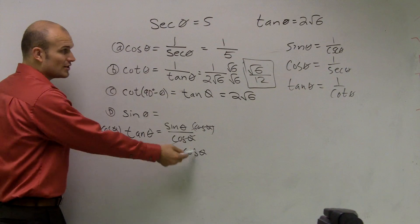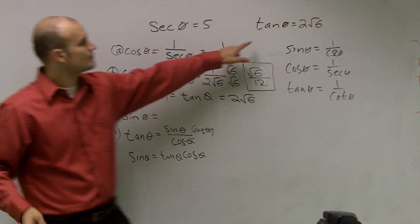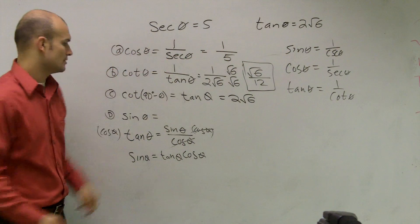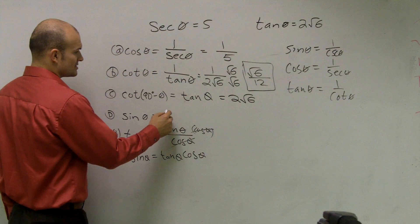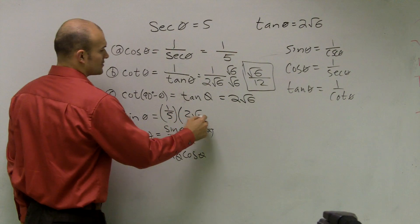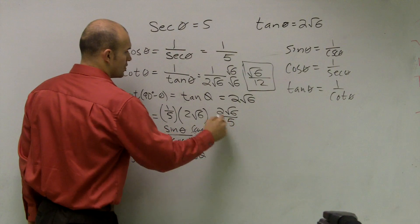Then do I know what tangent is and do I know what cosine is? Right there. So therefore, our final answer is 1 fifth times 2 radical 6, so it equals 2 radical 6 over 5.